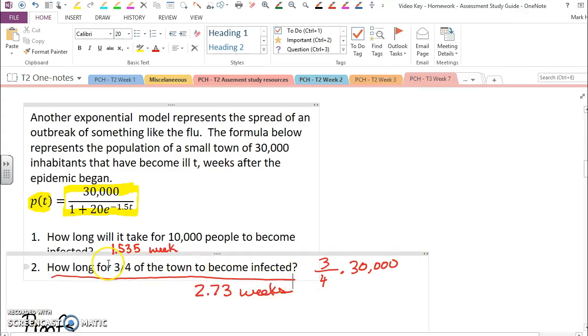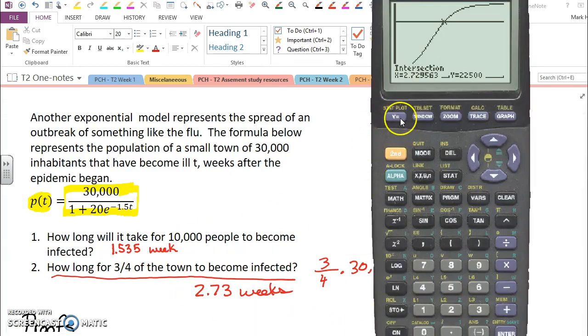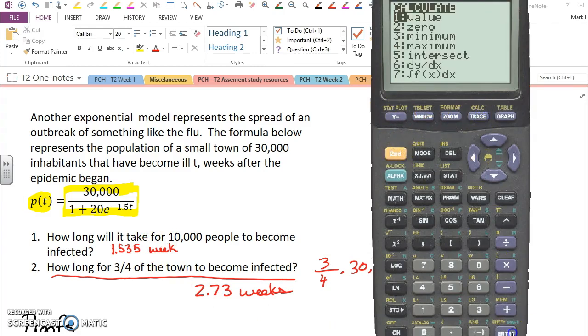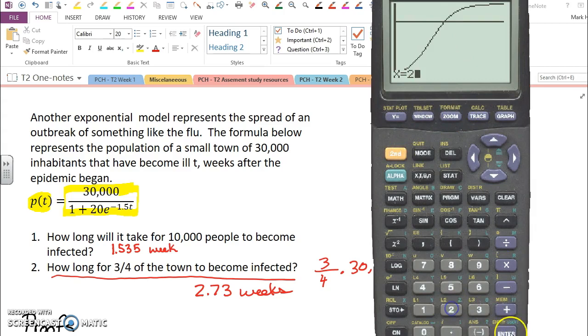You weren't asked for how many people would be infected after two weeks, but that would be an easy calculation as well. Now I would go second, calculate a value, and plug in two weeks, and my calculator would spit out 15,032 people after two weeks.